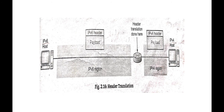If our system doesn't know IPv6 it will discard the packet — so to prevent that, we use header translation to convert to the language the destination understands. The header translation device removes the source header and applies the appropriate header so both systems can communicate. Header translation uses the mapped address to translate IPv6 to IPv4. Rules are followed during this transformation — some fields are set to zero, some are discarded, some are calculated.